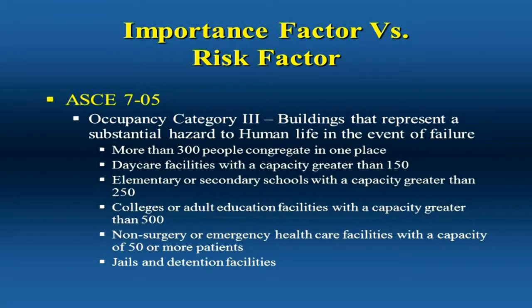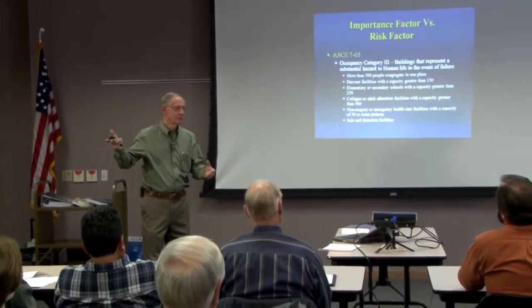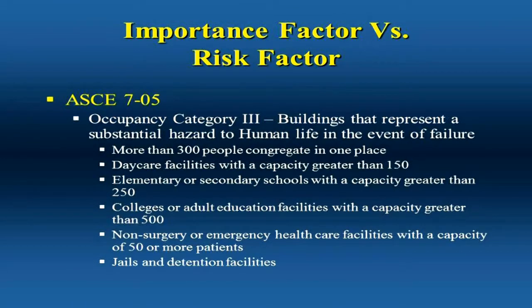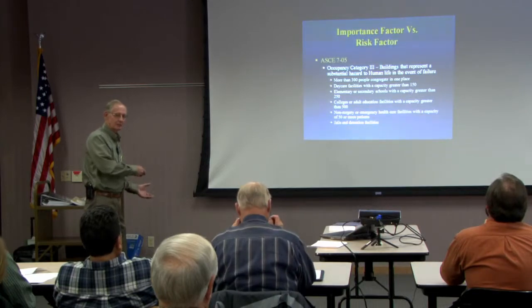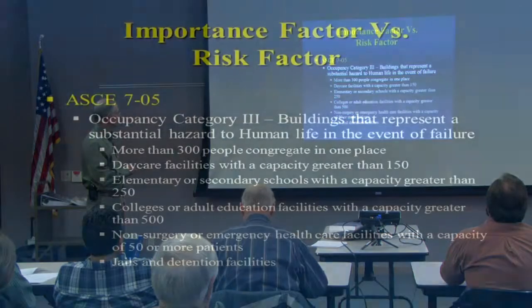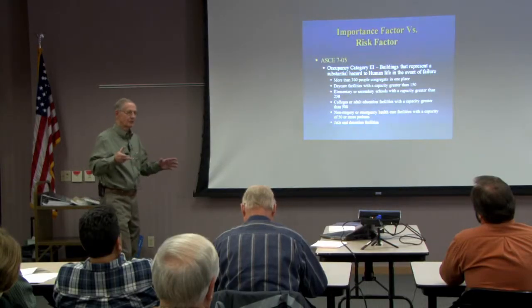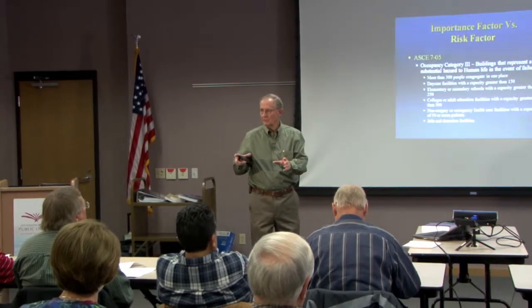Looking at the definitions of categories 3 and 4 for ASCE 7-05: they include buildings that house more than 300 people in one area. Is it a daycare facility with capacity greater than 150? If not, it's category 2; if so, it's category 3. Elementary or secondary schools with capacity greater than 250, colleges or adult education facilities with capacity greater than 500, and healthcare facilities without surgery or emergency characteristics with 50 or more patients also fall into category 3.